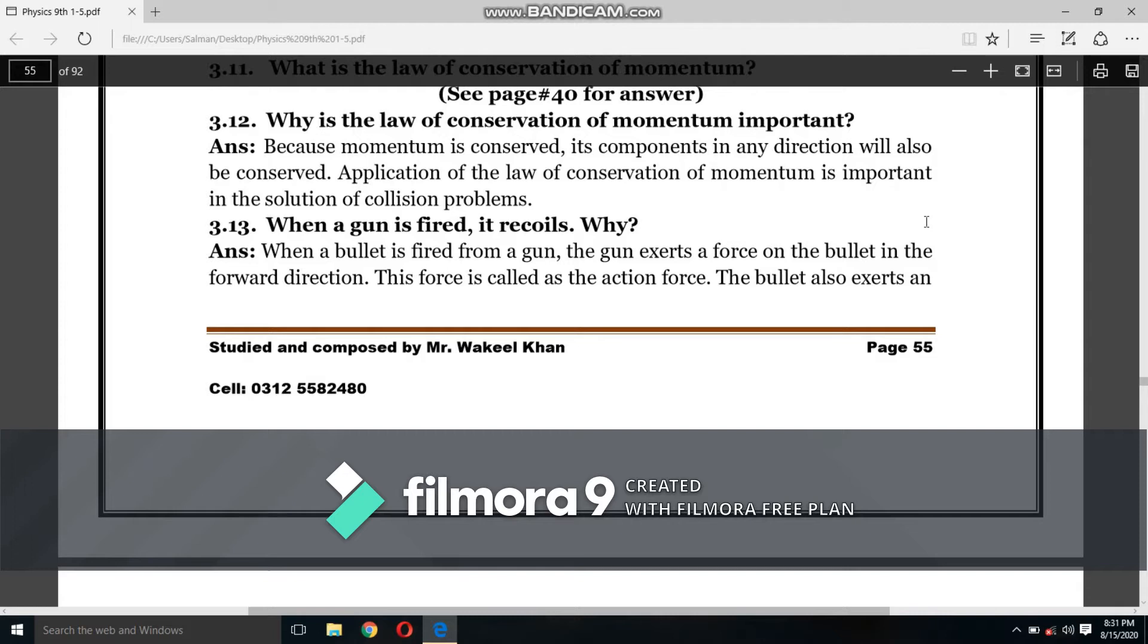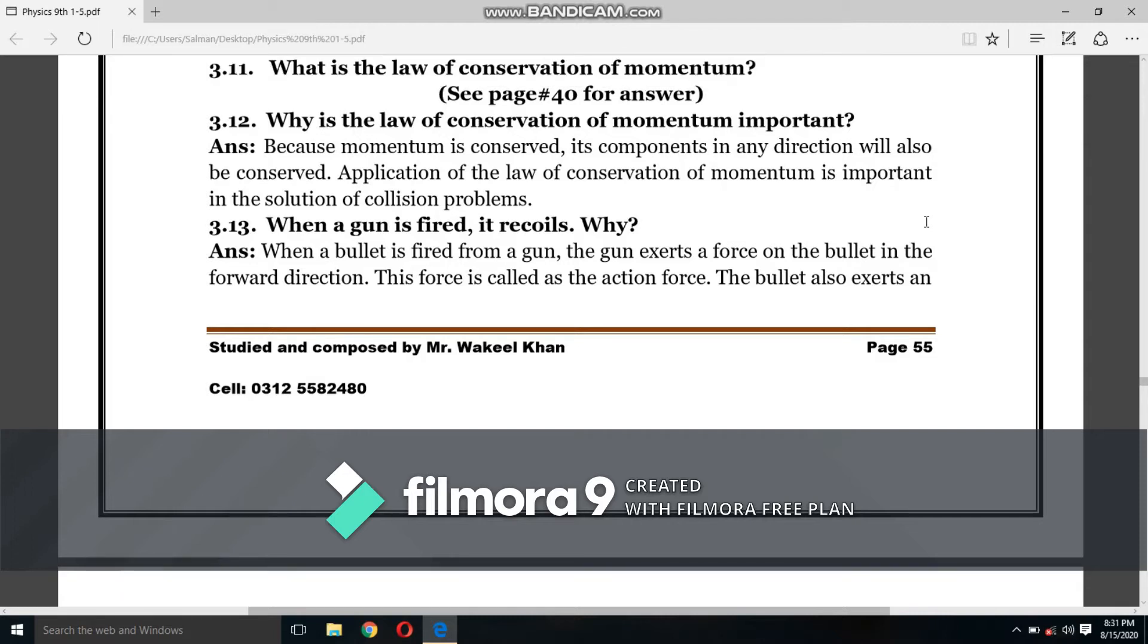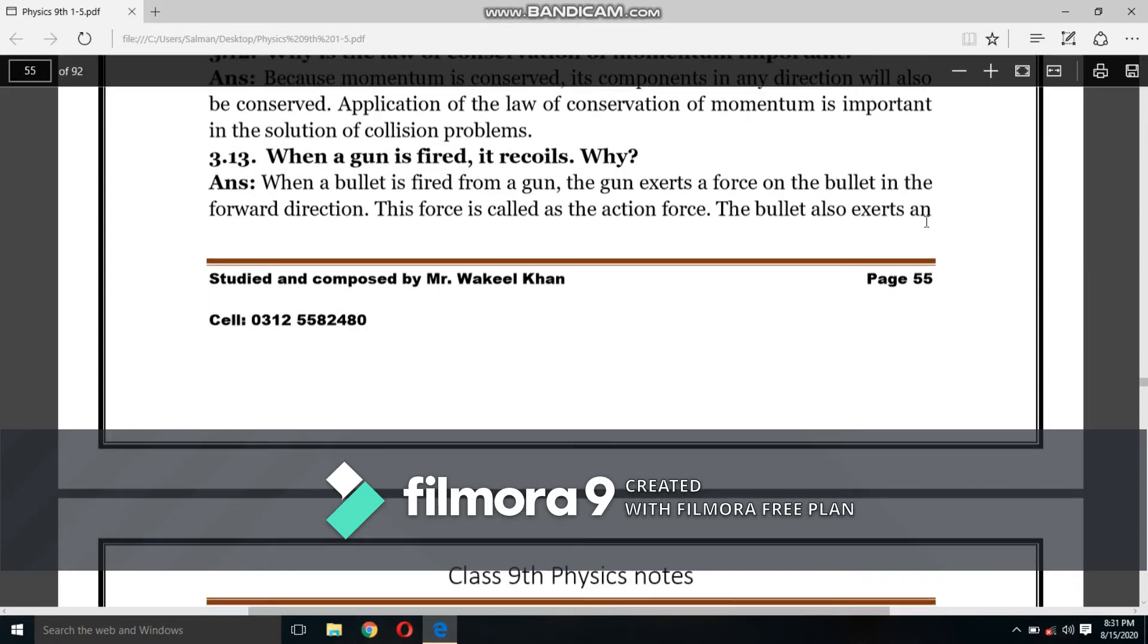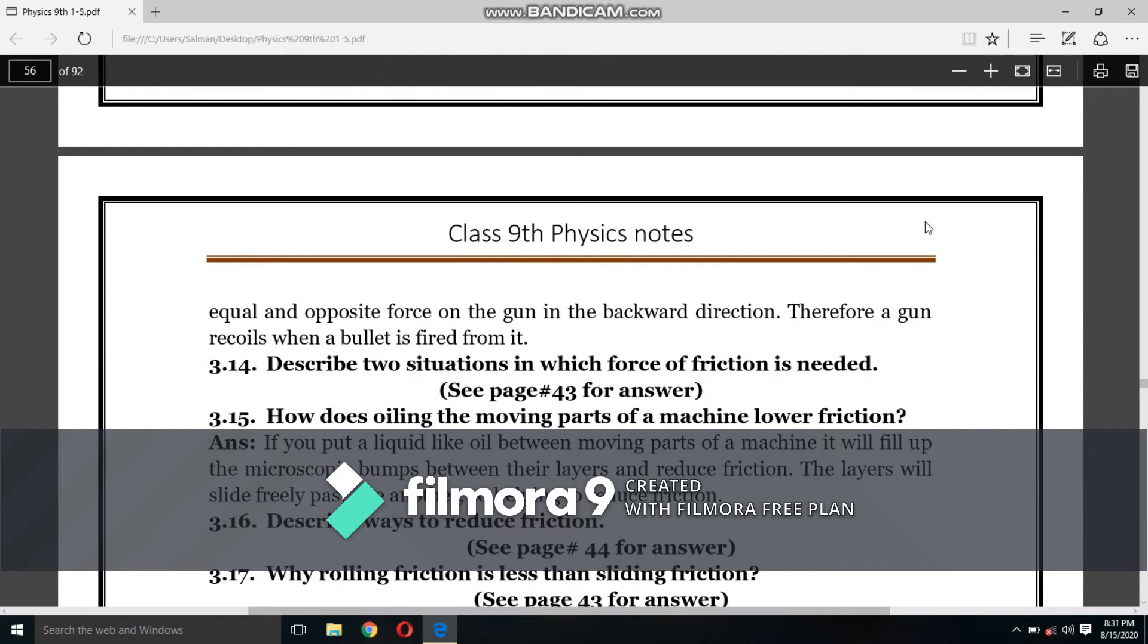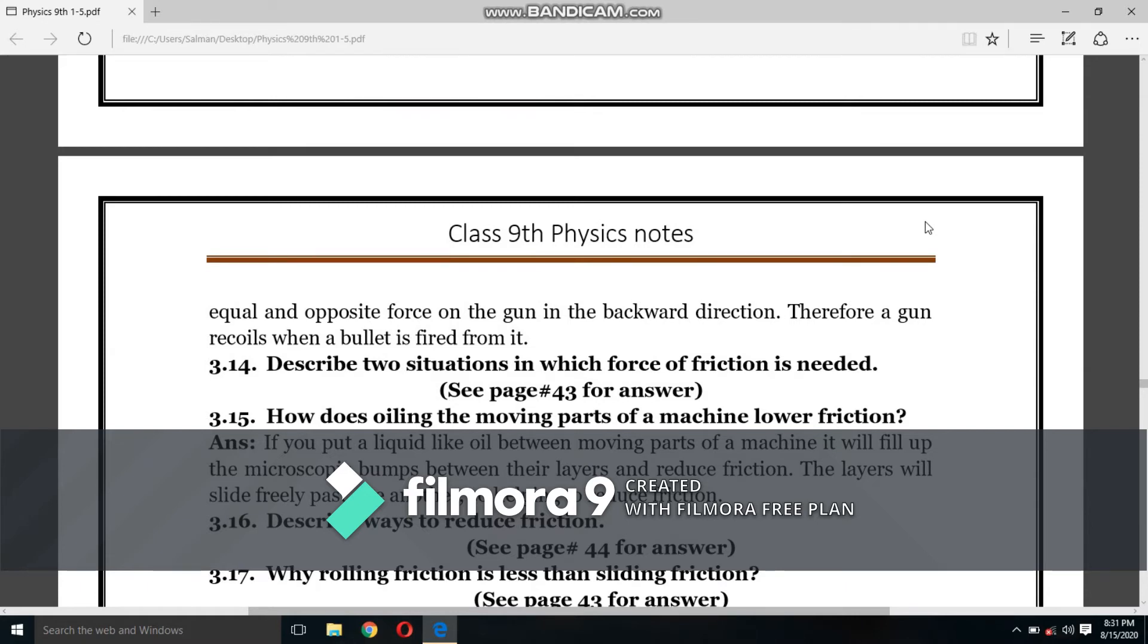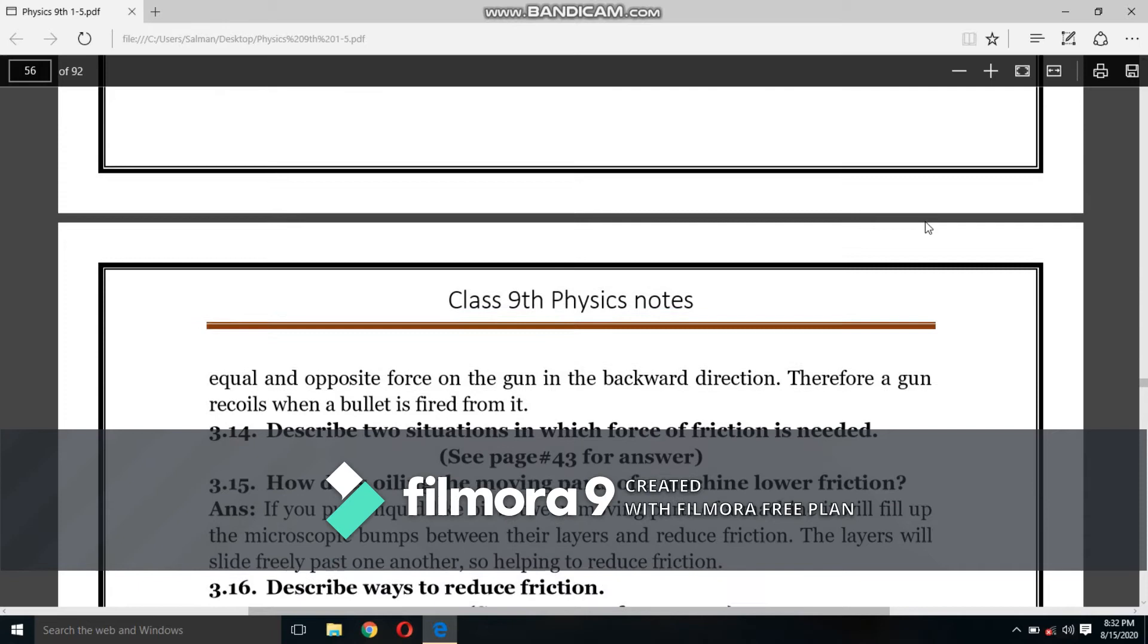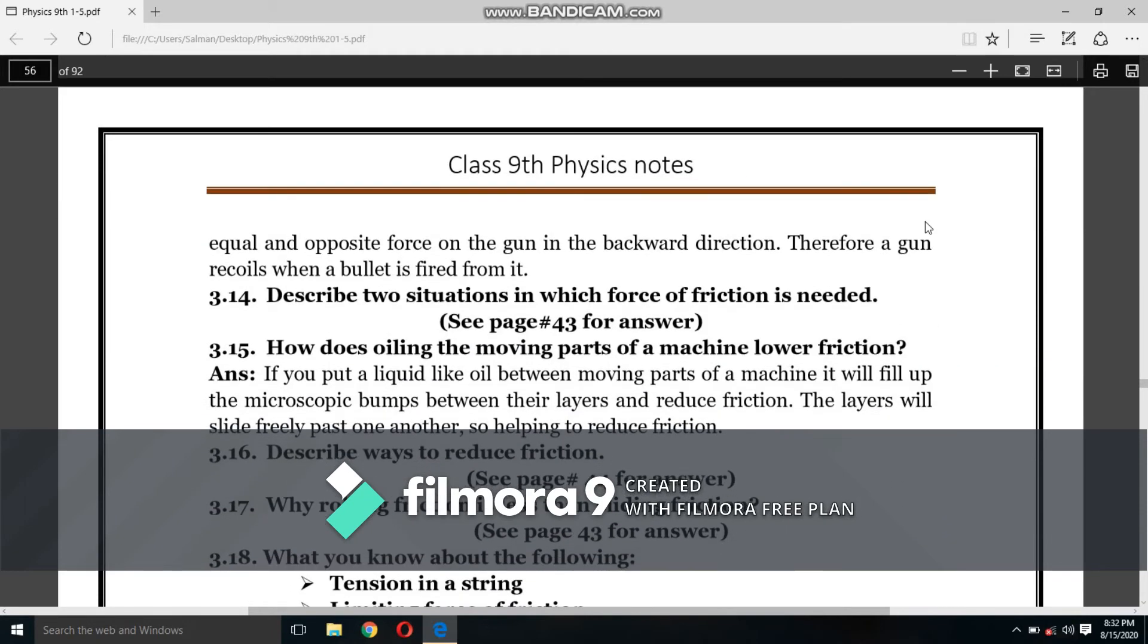When a gun is fired, it recoils. Why? When a bullet is fired from a gun, the gun exerts a force on the bullet in the forward direction. The bullet exerts an equal and opposite force on the gun in the backward direction. Therefore, a gun recoils when a bullet is fired from it.